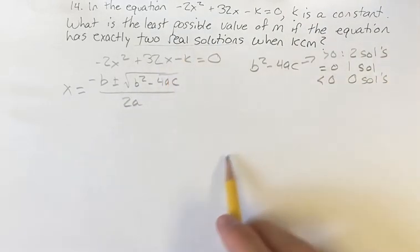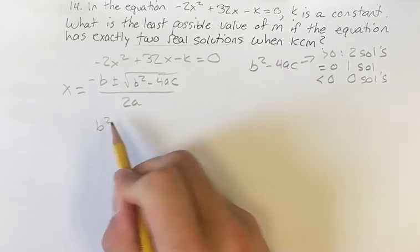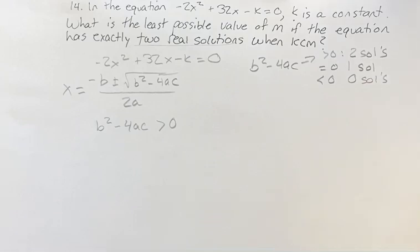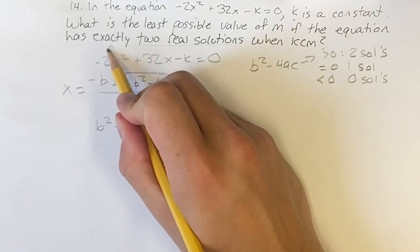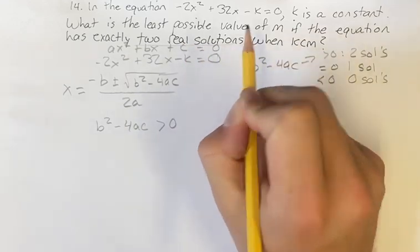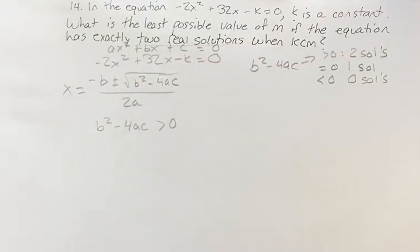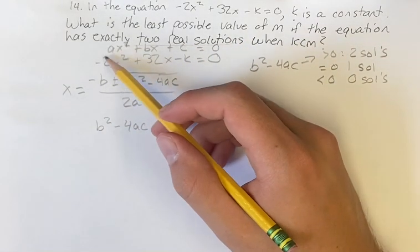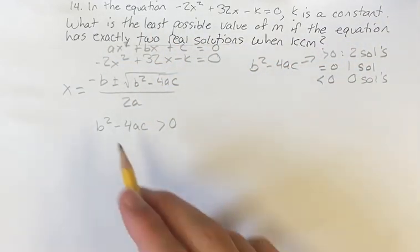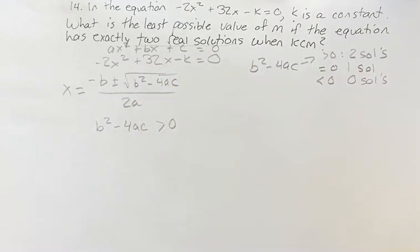So we're looking for when there's two real solutions, so b squared minus 4ac is greater than 0. And if we're lining that up with ax squared plus bx plus c equals 0, the standard form of a quadratic, then we can line up: a is going to be negative 2, b is going to be 32, c is going to be negative k. We can plug those values into this and solve for k.